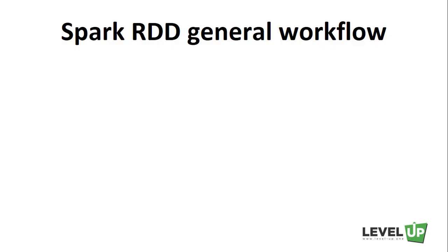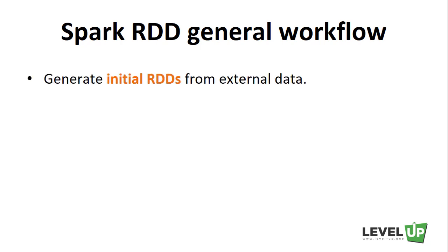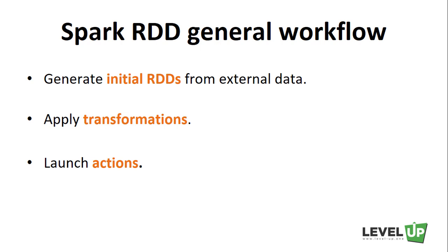To summarize, every Spark program will work as follows: generate initial RDDs from external data, apply transformations such as Map and Filter on RDDs, then launch actions such as Count to fire off the computation of the result, which will be optimized and executed by Spark. In the later lectures of this section, we will go through each of these steps in detail.